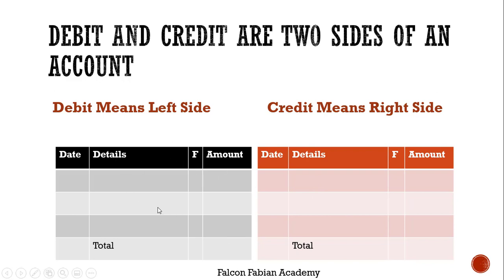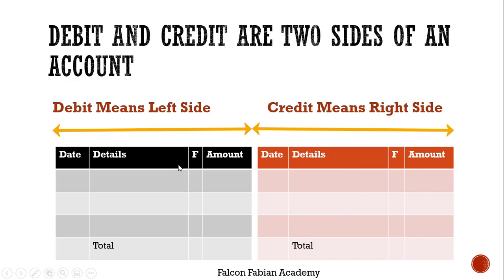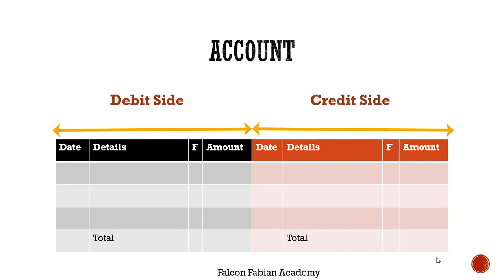So this is the left side and this is the right side. Debit means the left side of an account and credit means the right side of an account. So whenever it is said that you need to debit an account, basically what you are told is that you need to place that information on the left side of this account. And whenever it is said that an account needs to be credited, it means that the information needs to be placed on the right side of the account.